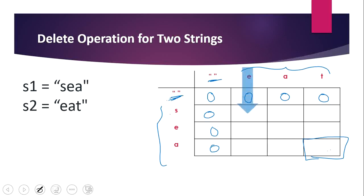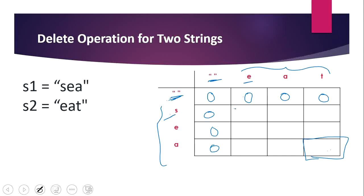Starting from this cell, we compare common subsequences between 's' and 'e'. Nothing matches — s and e are not equal — so we fill 0. This cell checks 's' versus 'ea': again nothing matches, so 0. And 'eat' versus 's': nothing matches, so 0. Moving to 'e' and 'e': they are equal, so the common subsequence here is 1. For 'e' and 'ea', e is the common subsequence, so we fill 1 again. Finally, 'ea' and 'eat' also has 1 common subsequence.